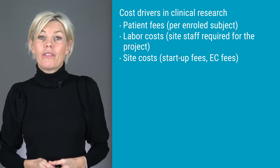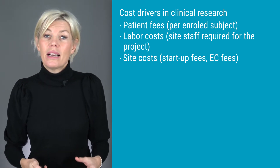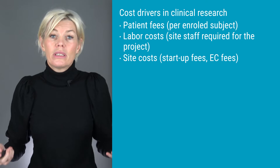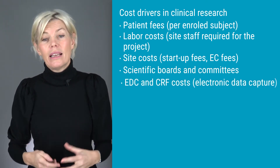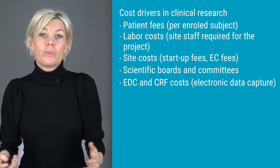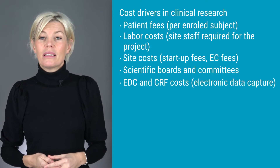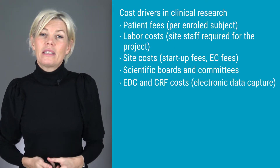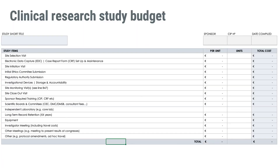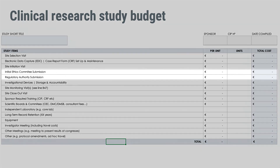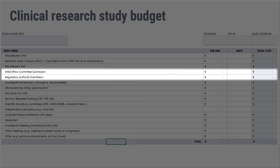In addition, there are costs to cover expenses associated with the site and various startup activities, such as startup fees to the ethics committee, scientific boards and committees, and the EDC — electronic data capture costs. These costs won't change much as a result of the number of subjects in the study, but instead they are affected by an increasing number of sites. This spreadsheet, also included below the video, covers site and startup costs, ethics committee fees, and regulatory authority review fees.